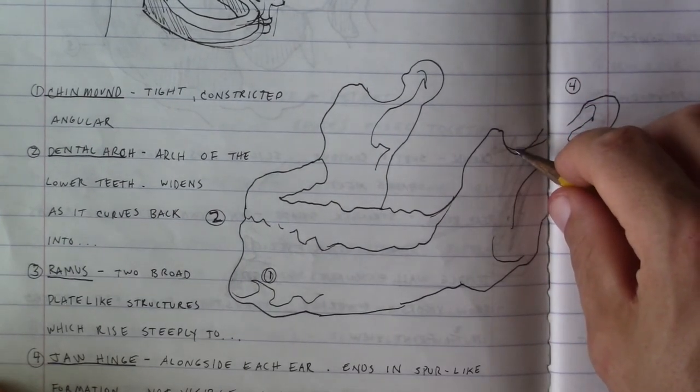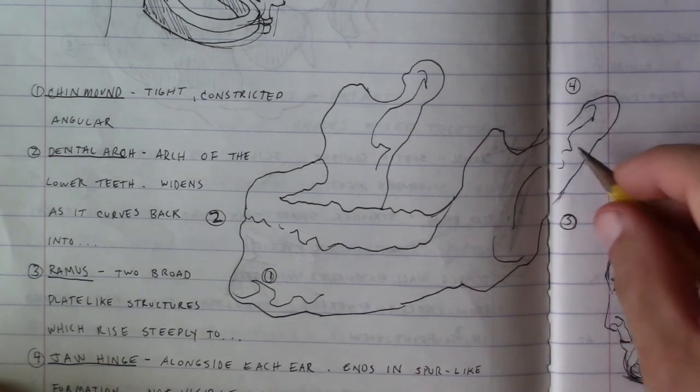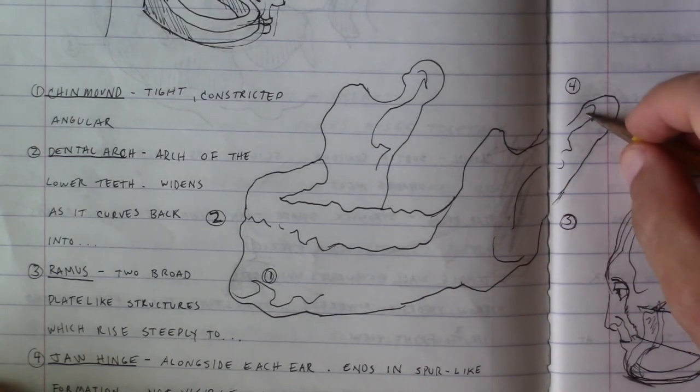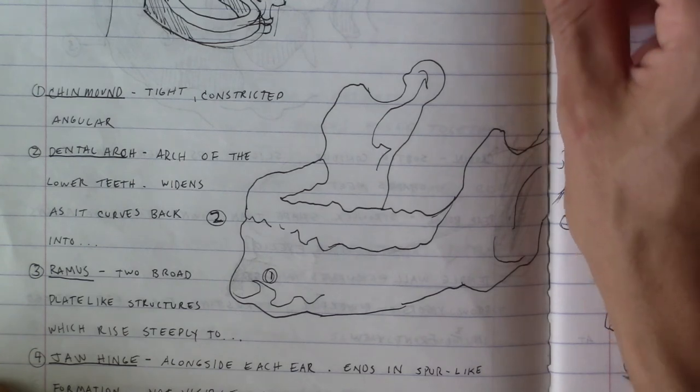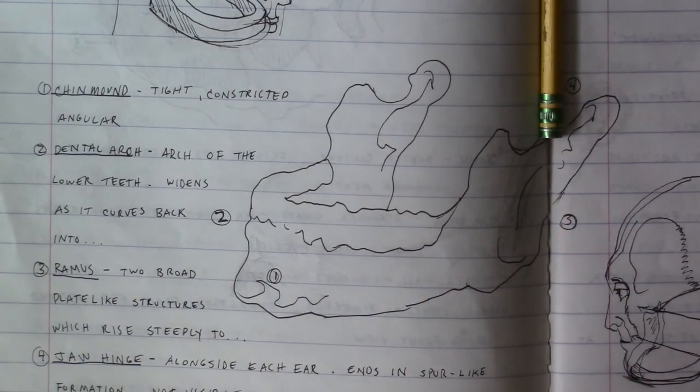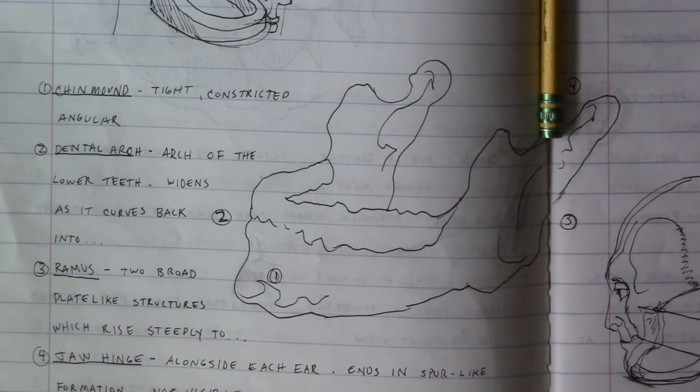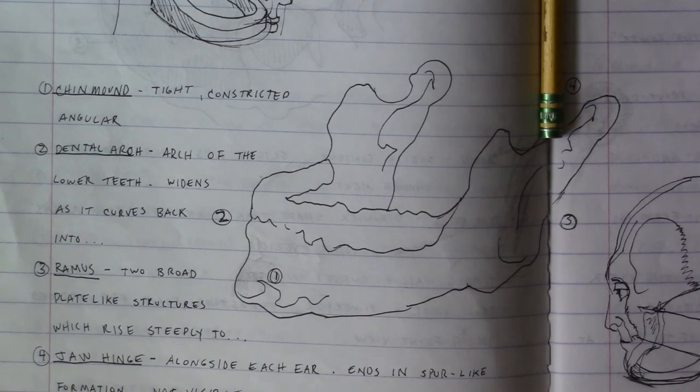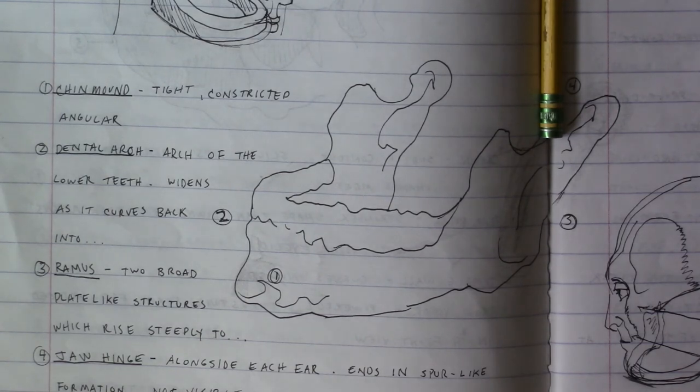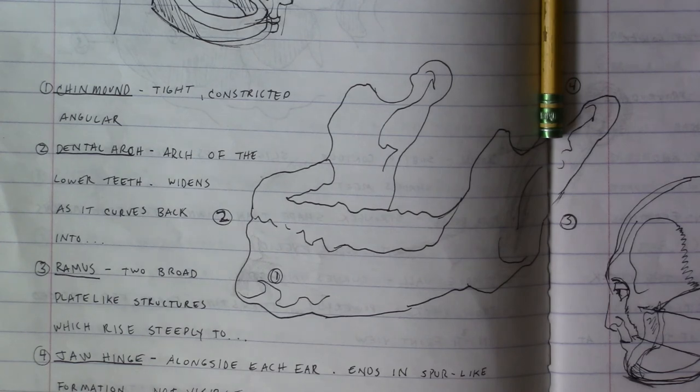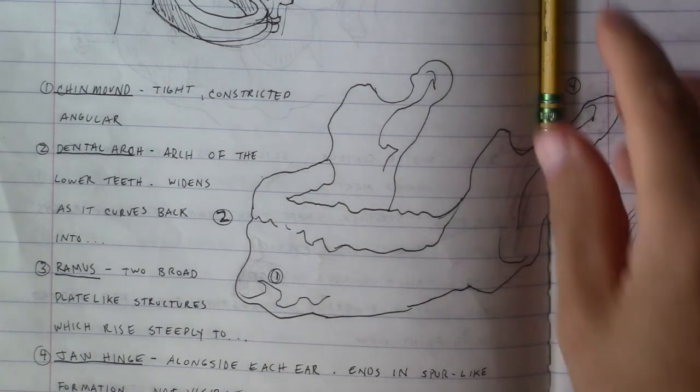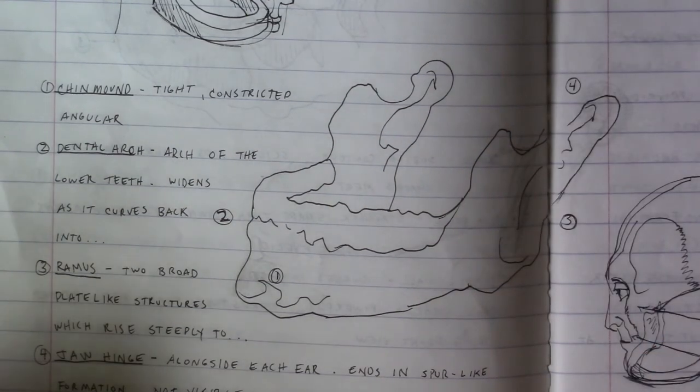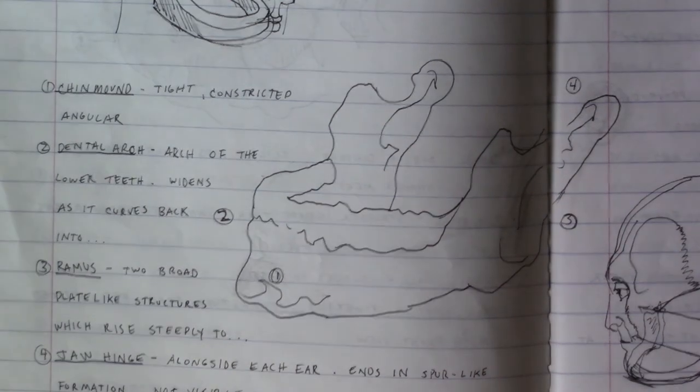And the ramus, R-A-M-U-S, connects to the jaw hinge. And the jaw hinge, if you want to feel your own jaw hinge, it should connect to your skull right alongside your ears, right in front of your ears. If you put your fingers right in front of your ears, along the sides of your jaw, and open and close your mouth, you'll feel your jaw hinge in action.